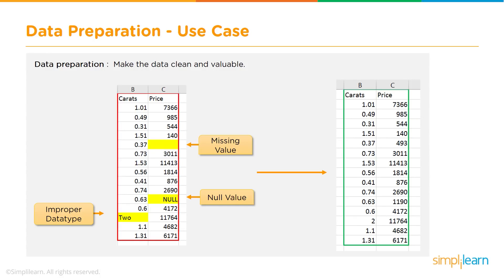There are missing values and null values. In this particular slide, we are seeing three types of issues. One is a missing value — there is nothing, blank. Then there is a null value — it says null. Now the system cannot handle null values. There is also improper data — it's supposed to be a numeric value but there is a string or a non-numeric value.